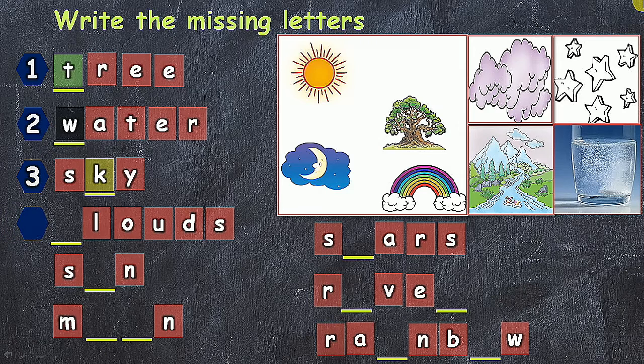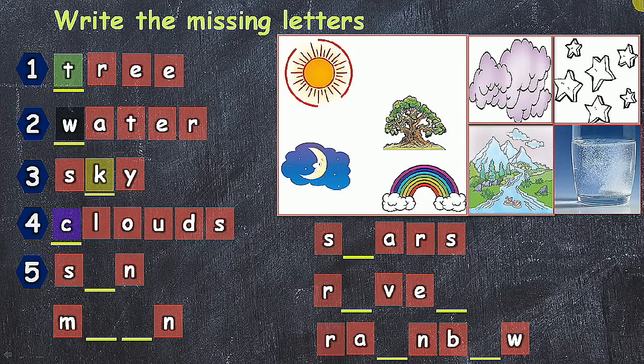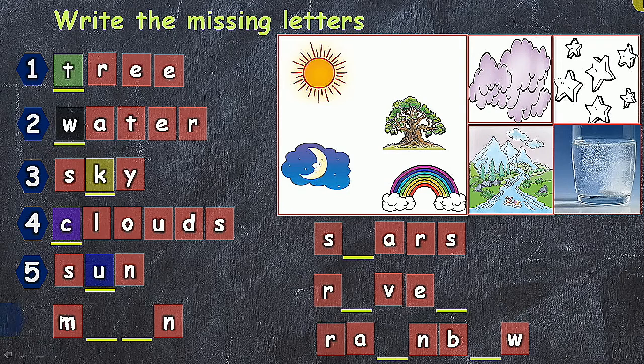And then fourth one is clouds. In this fourth one, C is the missing letter. C-L-O-U-D-S, clouds. Fifth one is sun. In fifth one, U is the missing letter. S-U-N, sun.